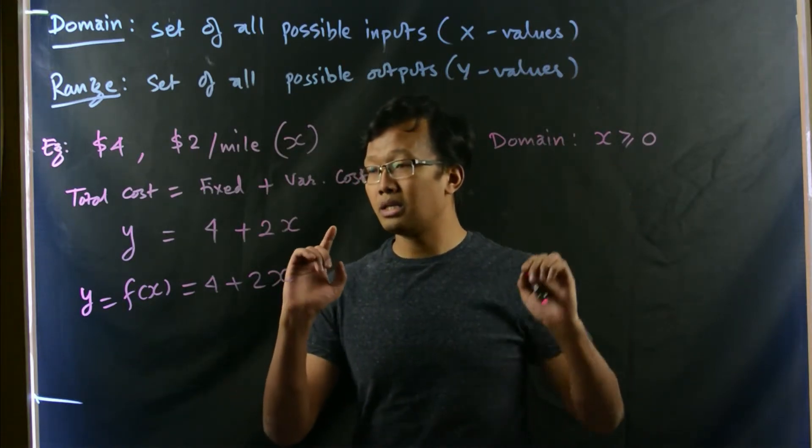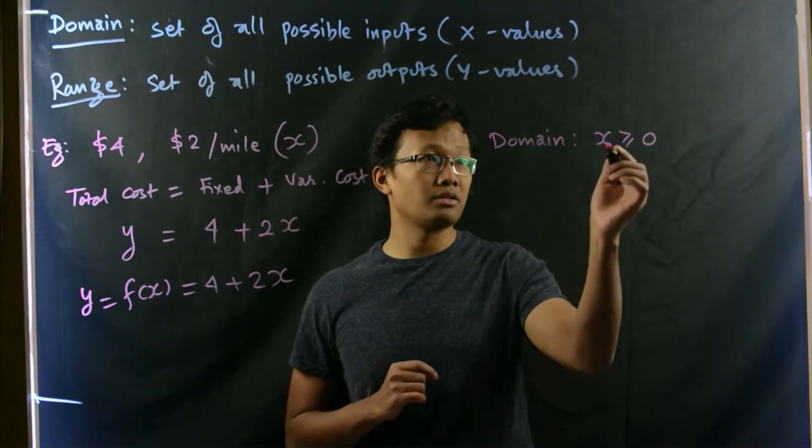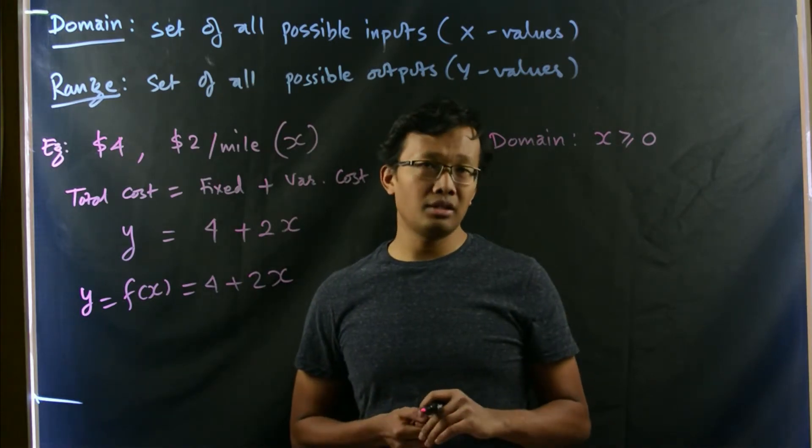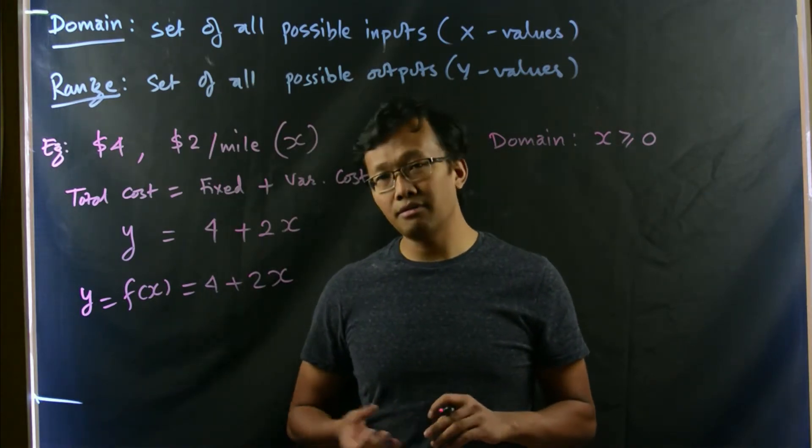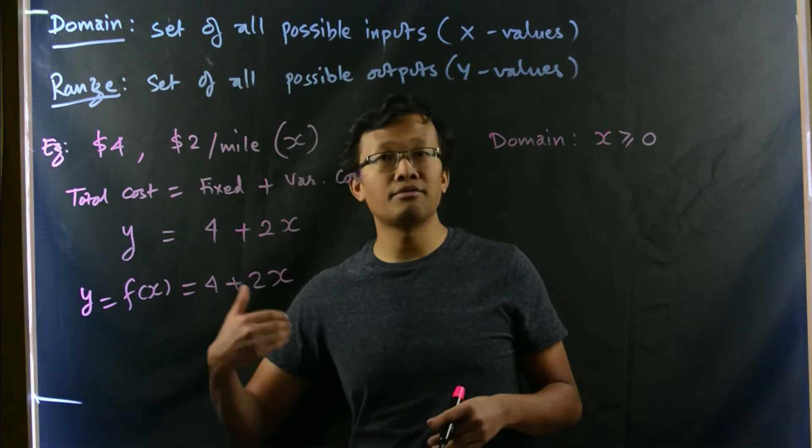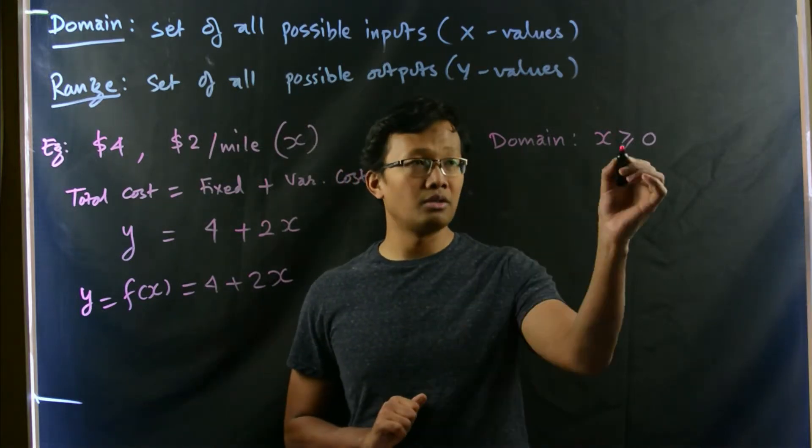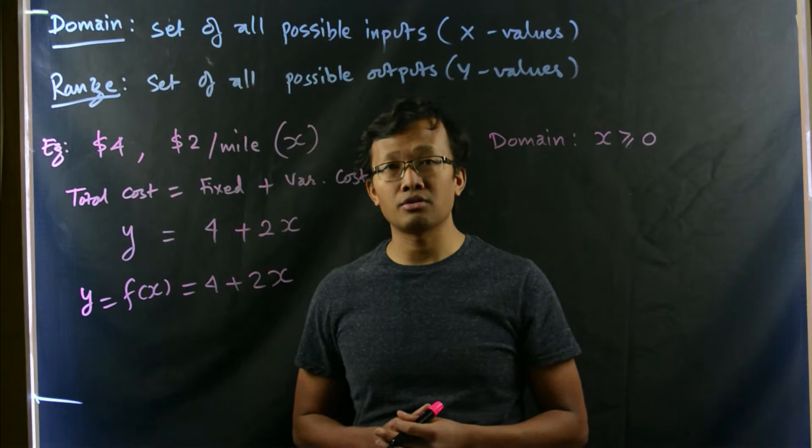But can you travel negative 2 miles or negative 4 miles? Is that possible? No, that's not possible. We always go for x is greater than or equal to 0.